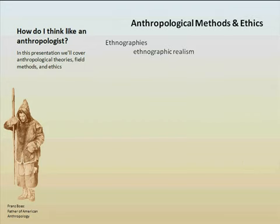Anthropologists produce ethnographies, and an ethnography is a report on ethnographic work. We try to do something called ethnographic realism, which uses the etic approach to get a scientific, objective view of the society. But we still want to incorporate the emic approach, which is interpretive anthropology — trying to get past our own ethnocentrism to understand the native's point of view.